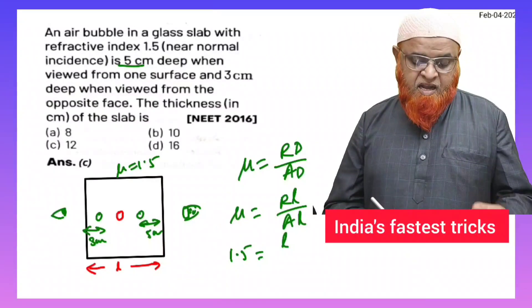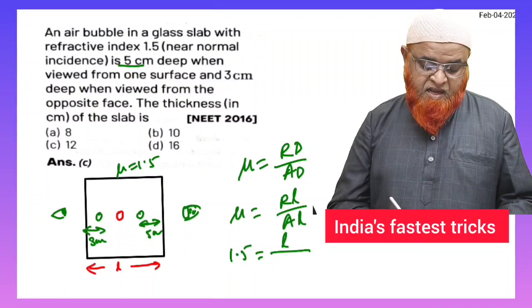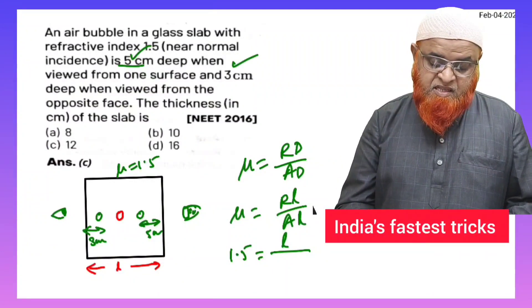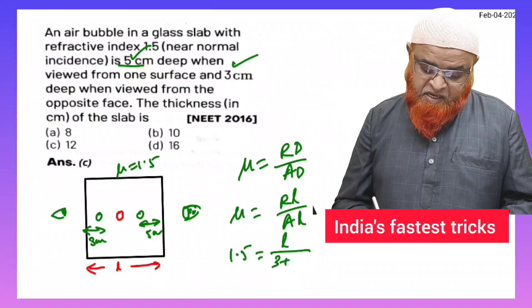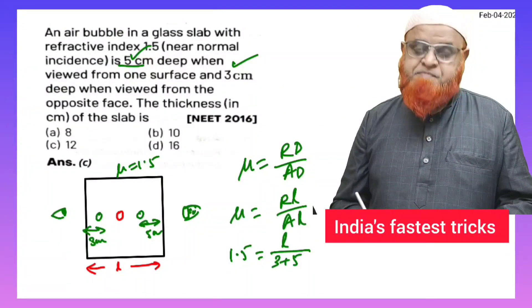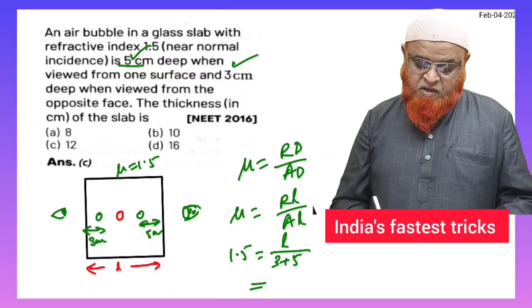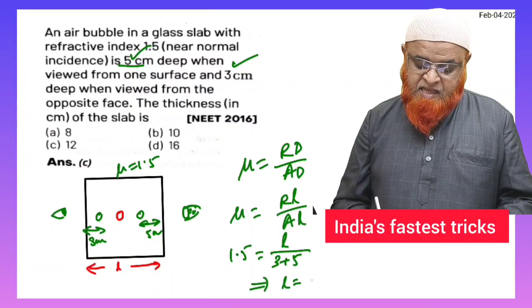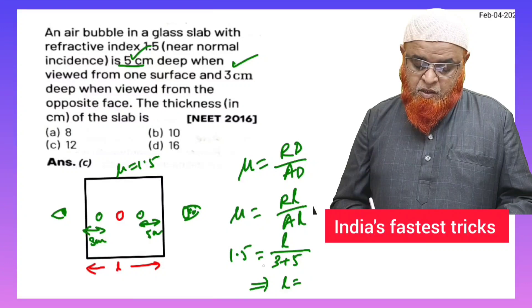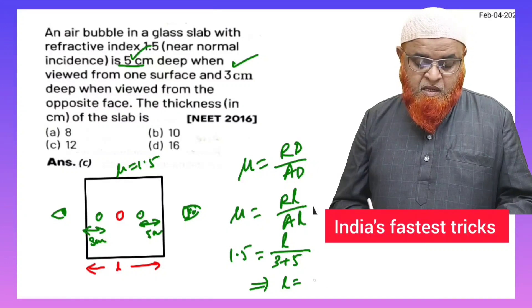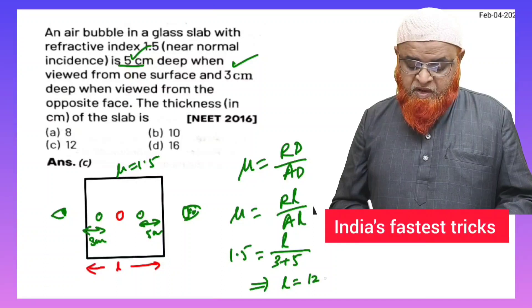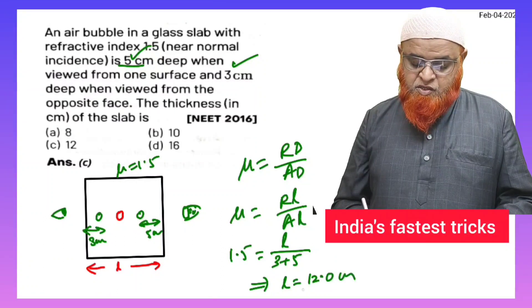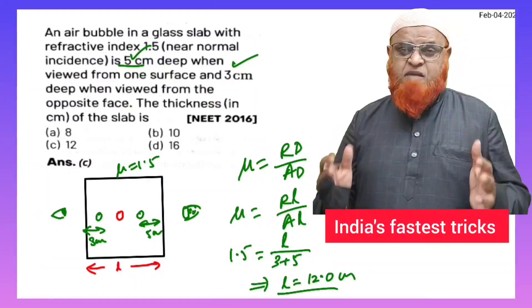And apparent length means you can consider the apparent length as these two lengths - that is 5 centimeters and 3 centimeters - combined together. Therefore that is 3 plus 5, which equals 8. So therefore this implies that you will be getting the real length as 1.5 times 8, which is going to be 12. So that is going to be 12 centimeters as the length.